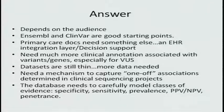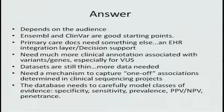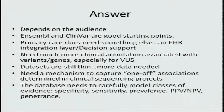We need variants of unknown significance recorded somewhere so they can be focused on by people making associations or have data added later. We need a mechanism to capture these one-off associations where a laboratory is doing a clinical sequencing project with a focused clinical question. The database needs to carefully model classes of evidence: specificity, sensitivity, prevalence, PPV and NPV, and penetrance — these are really key elements the system needs to be able to capture.